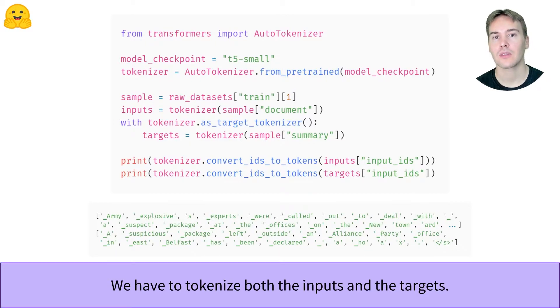There is a small trap there, though, as we need to tokenize our targets inside the as_target_tokenizer context manager. This is because the special tokens we add might be slightly different for the inputs and the targets. So the tokenizer has to know which one it is processing.